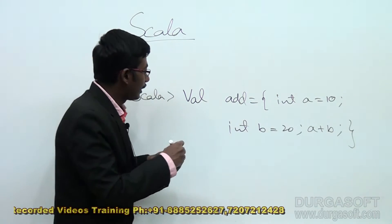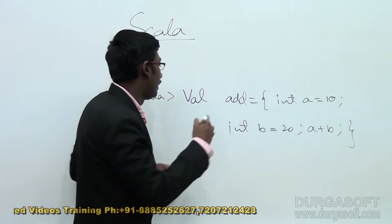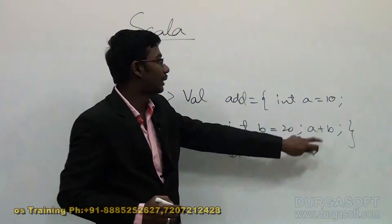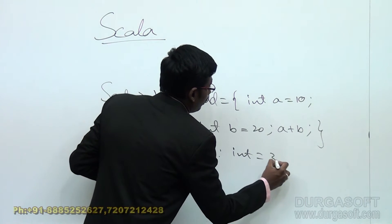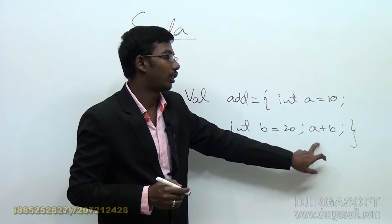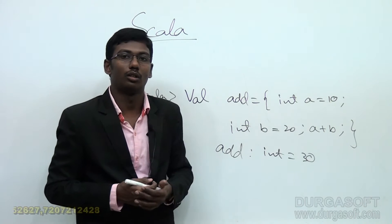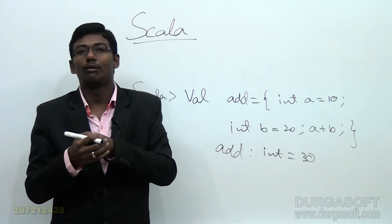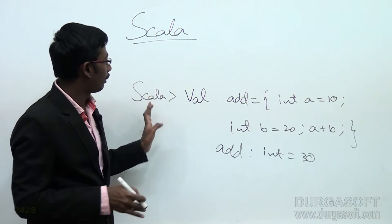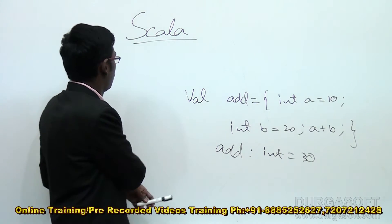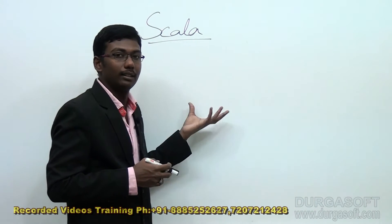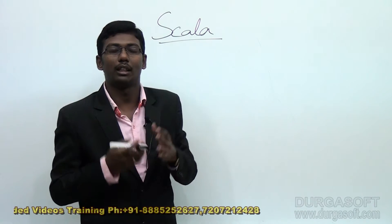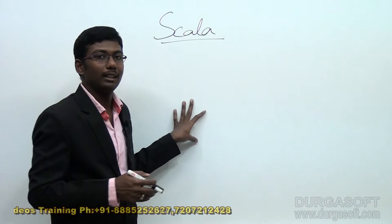Suppose the address value is 'add'. Scala will directly assign the result to 'add'. The data type here is integer since we're adding two integers, so we get an integer result. This is how we can perform actions in a block — executing a sequence of statements in block mode. This is one of the advantages of Scala. If you want to use control structures for filtering or checking conditions on large amounts of data, Scala supports that too.